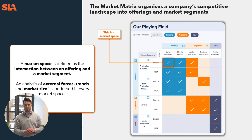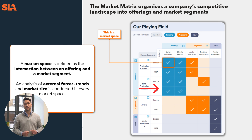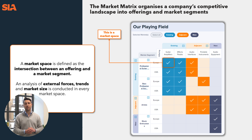Existing offerings are the products and services that we have on the market today that we sell. And market segments are the customers that we serve, both in terms of the channels and the geographies where we're present today. The intersection of an offering and a segment is known as a market space. Here in blue, you can see our existing market spaces — where we play today, where our revenue is generated from.